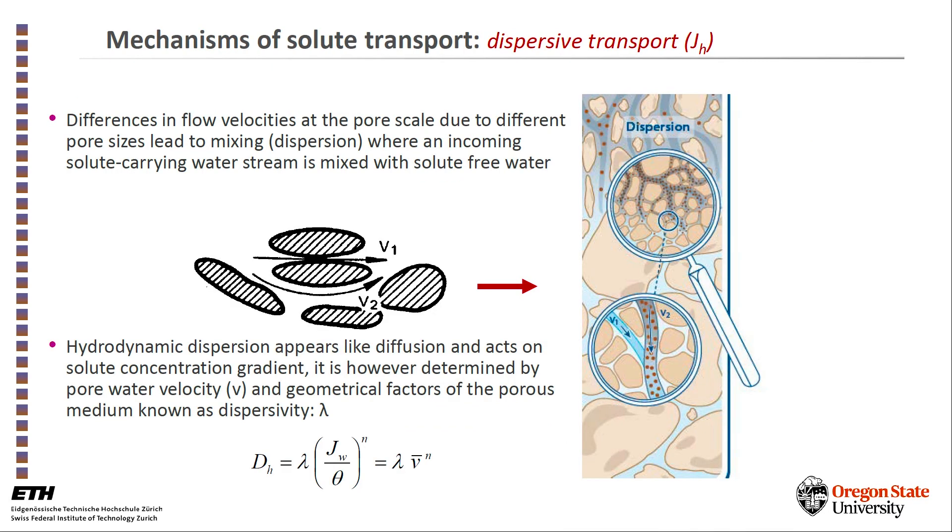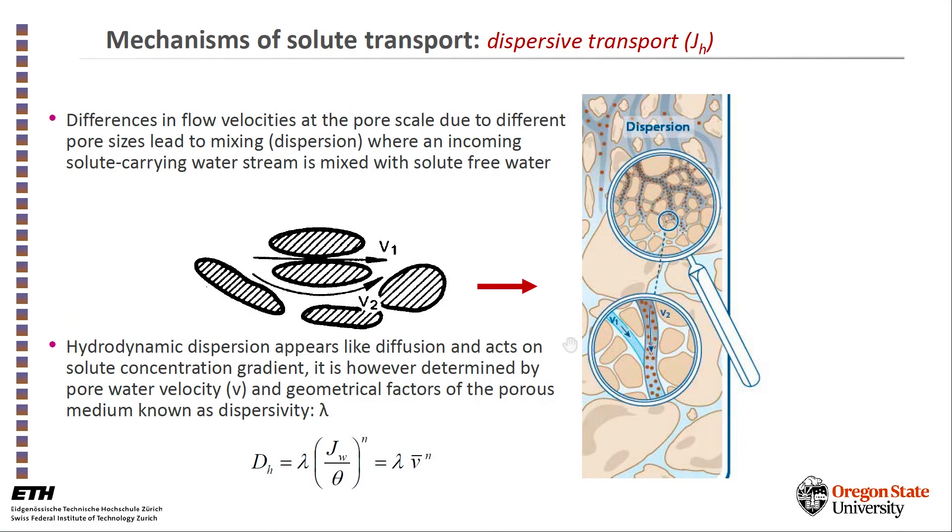The third mechanism of solute transport in soils would be dispersive transport. This is a bit unintuitive mechanism for many. The idea is simple. For example, if we have a soil with many different pore sizes, streams of water will flow fast in one of the sizes.